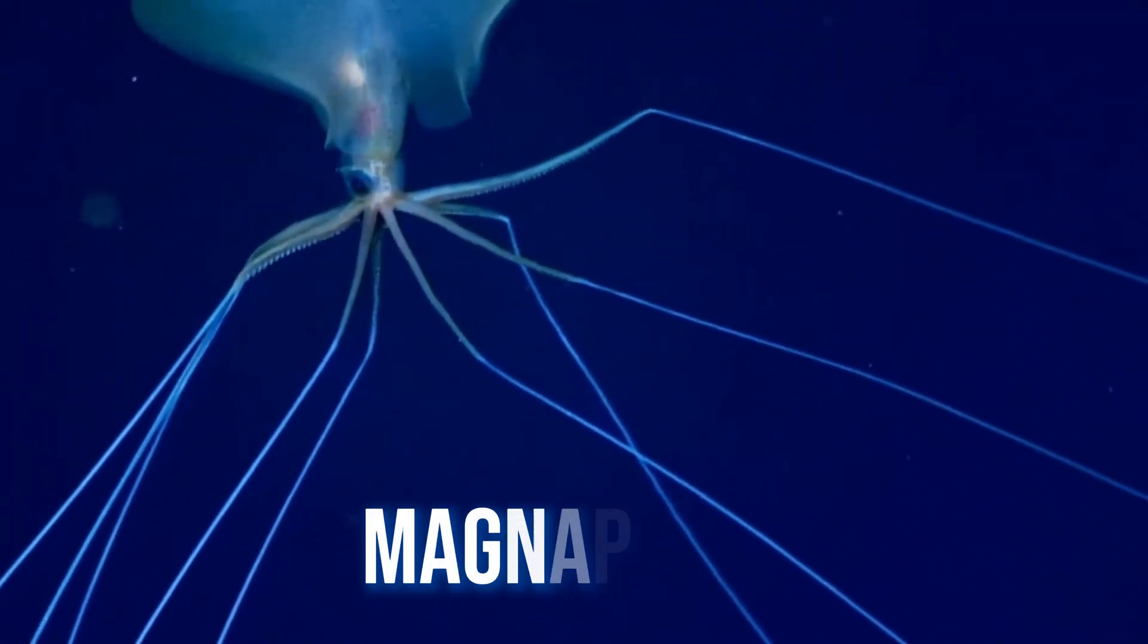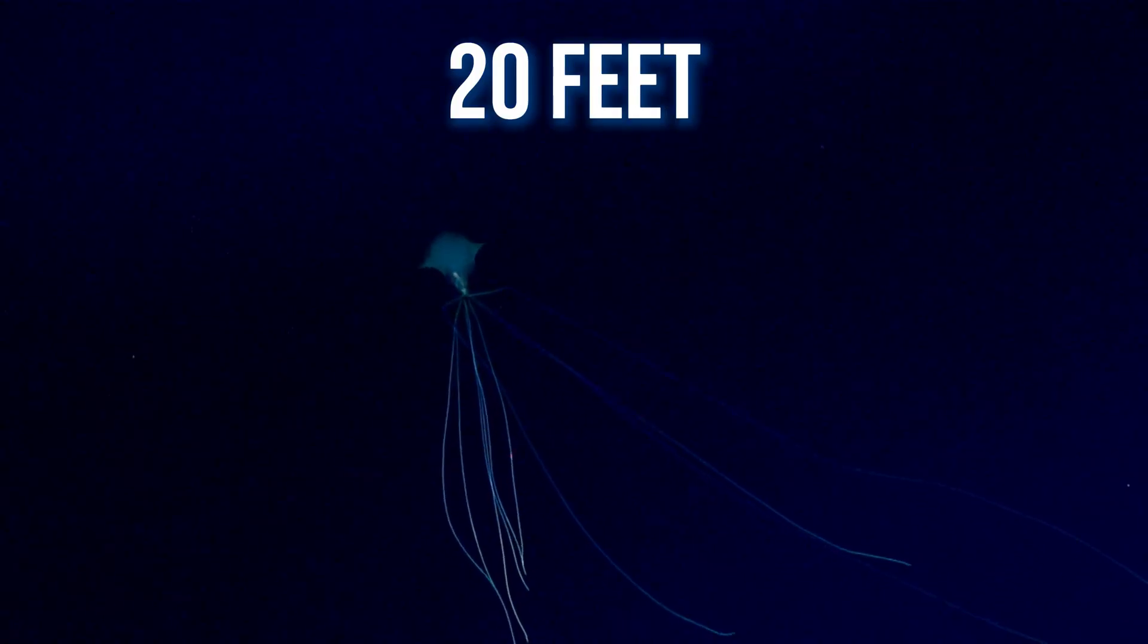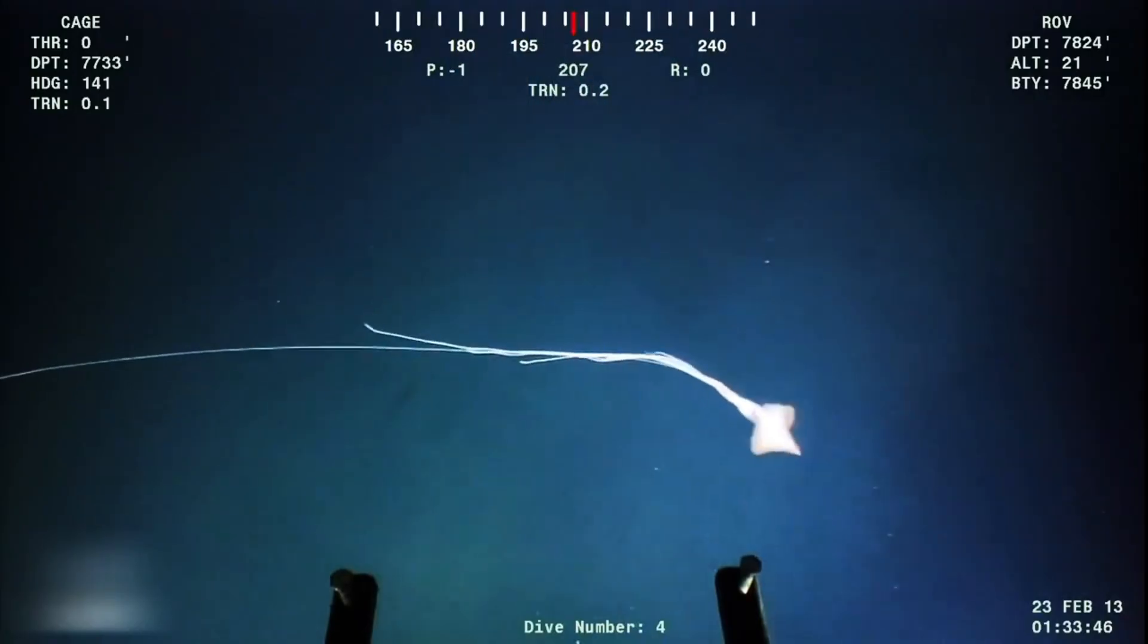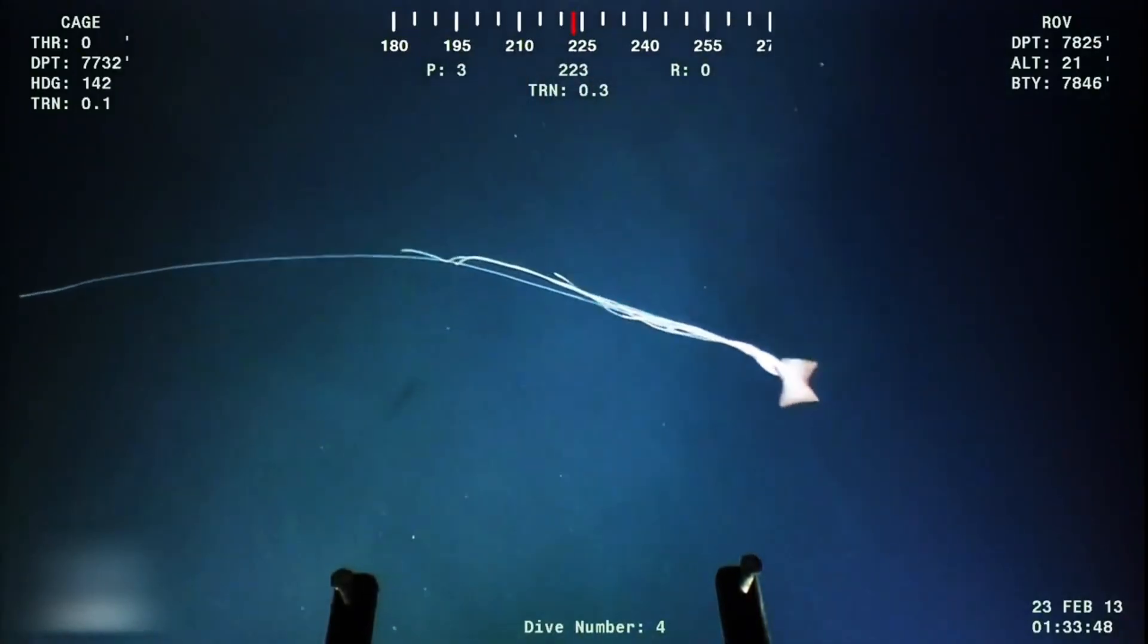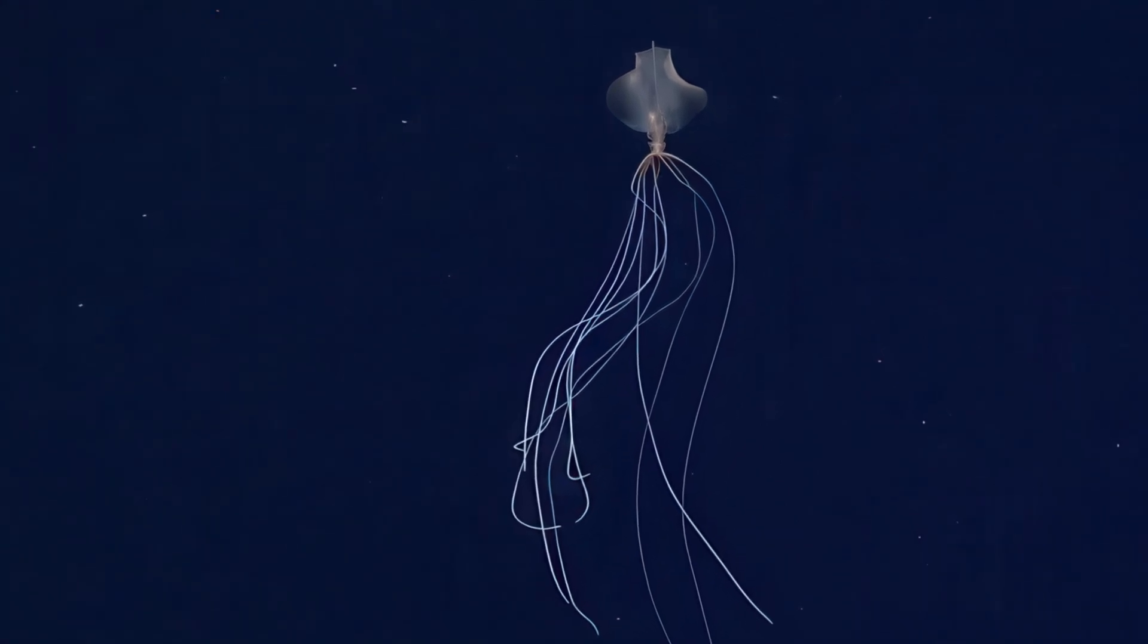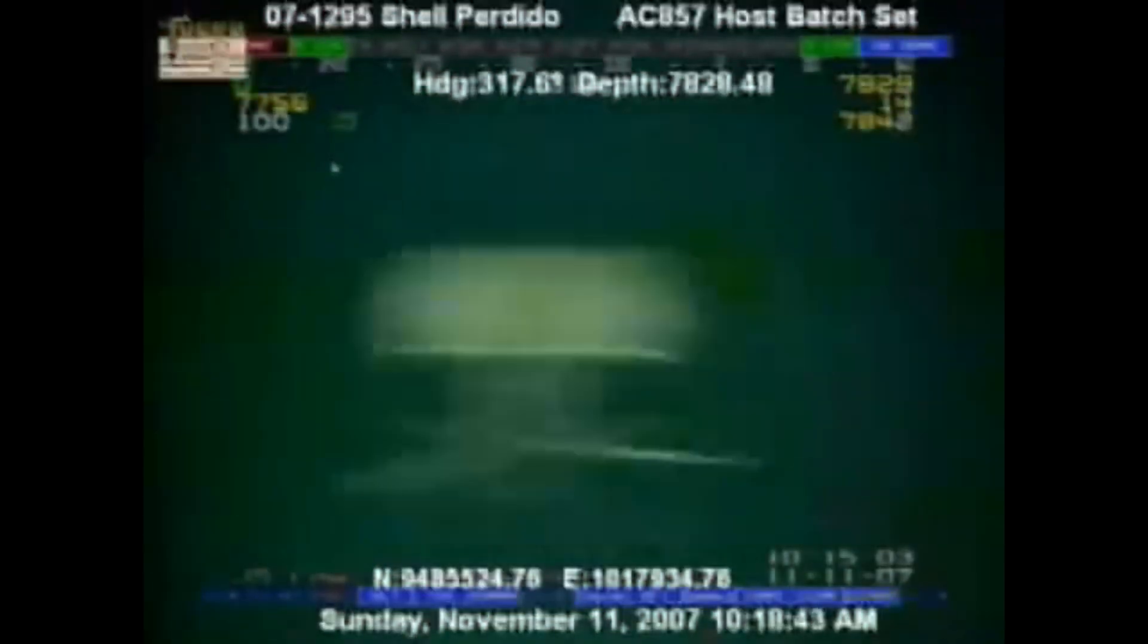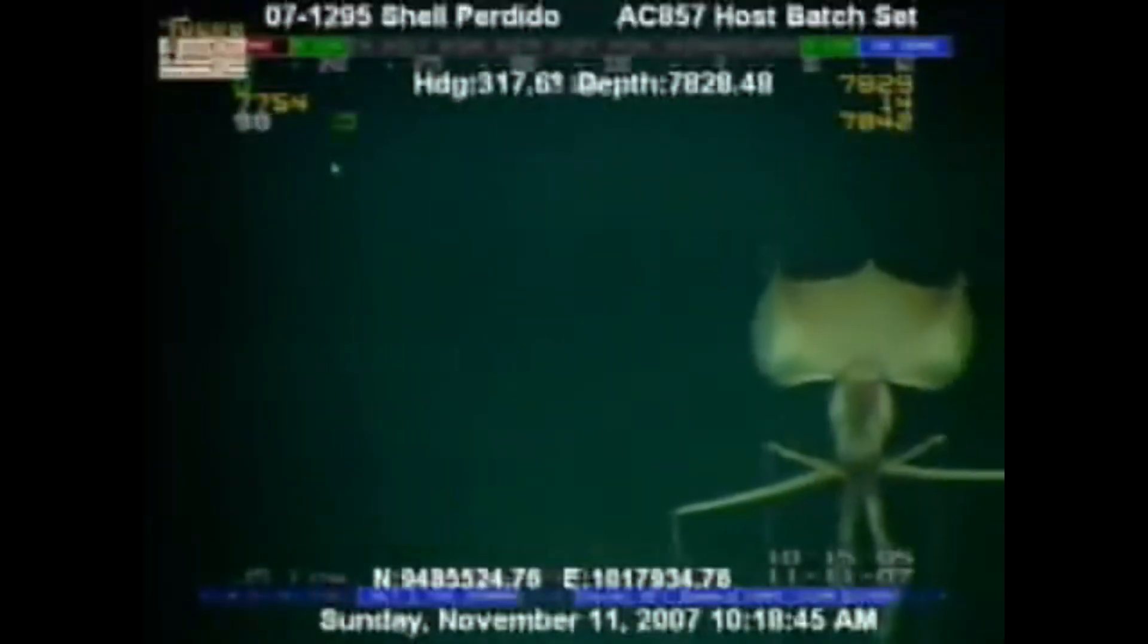This creature stretches nearly 20 feet long, though most of that length comes from its arms and tentacles, thin as threads, hanging down like drifting wires in the water. No one has ever captured a living specimen. No one has ever seen a mature adult. All we have are a few blurry frames recorded by a NOAA deep-sea ROV in 2001.